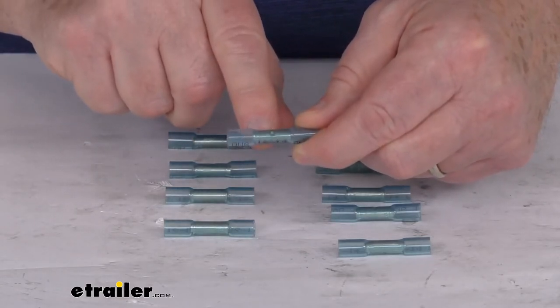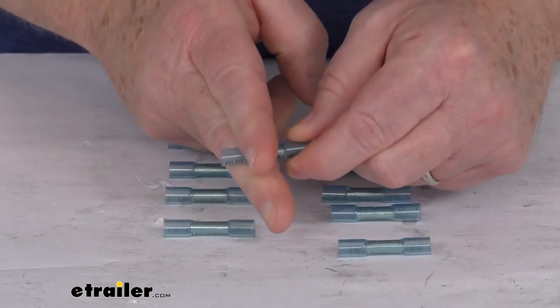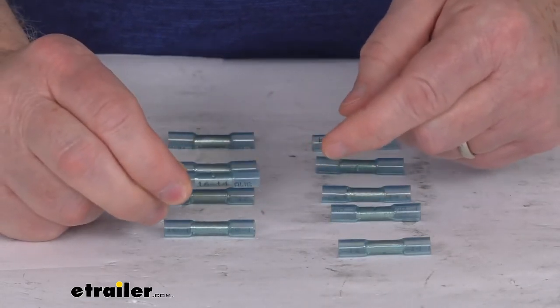Make sure your stripped wire is underneath the metal casing. Take your crimper and crimp down on that metal casing to make your connection. Then you'll do the same for the second wire on the other side.